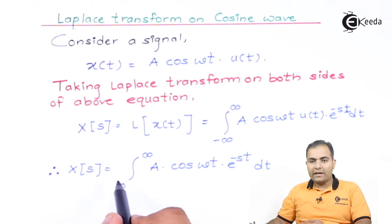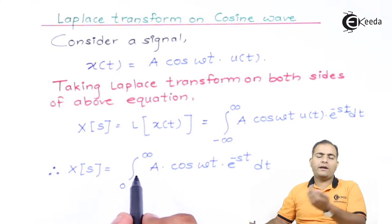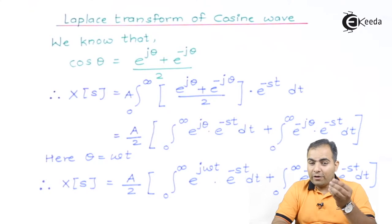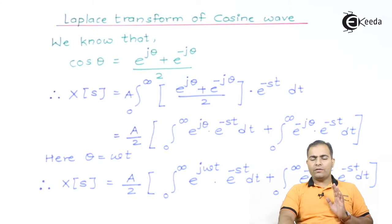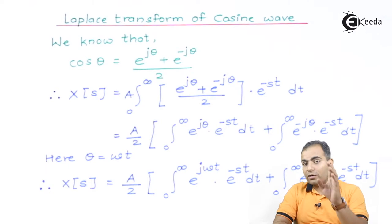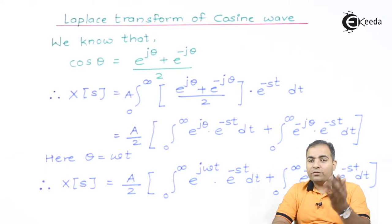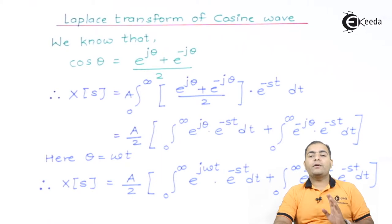The integration limits are changed from minus infinity to infinity, now changed to 0 to infinity. The A term is a constant, so I take it outside. In previous videos we studied the complex form of sine: (e^(iθ) − e^(−iθ)) / 2j. Here similarly, I am going to substitute the value of cos function. The complex form of cos(θ) is (e^(iθ) + e^(−iθ)) / 2.